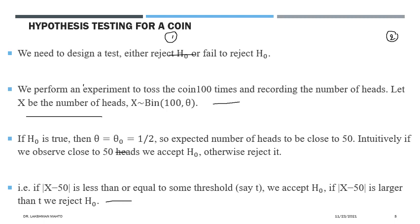Why are we taking 50 here? If you take theta-naught equal to 0.5 — meaning H0 is true, the coin is fair — then the mean of this binomial random variable is n times probability of success: n is 100, probability of success under null hypothesis is 0.5, so 100 times 1/2 equals 50. So 50 is the mean under the null hypothesis, and that is why we observe the closeness of the number of heads to 50.